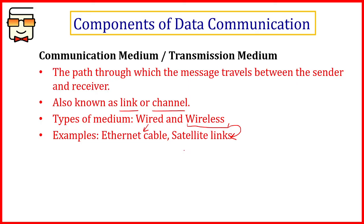For wireless medium, you can count air — through which the waves are being transmitted — as the medium. In the case of wired medium, you can have different kinds of cables like twisted pair cables, coaxial cables, fiber optics, and so on.